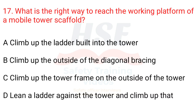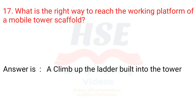Question 17: What is the right way to reach the working platform of a mobile tower scaffold? A. Climb up the ladder built into the tower. B. Climb up the outside of the diagonal bracing. C. Climb up the tower frame on the outside of the tower. D. Lean a ladder against the tower and climb up that. Answer is A. Climb up the ladder built into the tower.